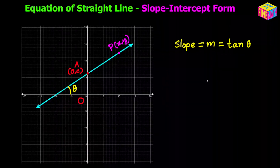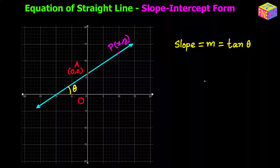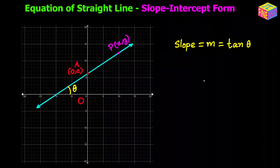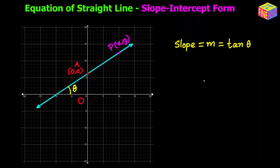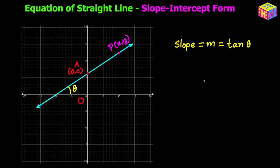Before we go into the discussion of the equation of a straight line, we need to understand what a straight line is. A straight line is actually the locus of a moving point. You can think of locus as a path — the path of a moving point which is moving in a particular direction. From its initial position, whichever direction it started moving, it continues to move in the same direction without changing direction.